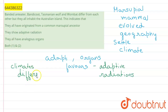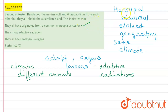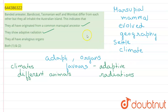Even though they share a common marsupial ancestor, because of geography they are now different animals. Looking at our options: the first option — they all originated from a common marsupial ancestor — is a true statement. They are all ultimately marsupial mammals but show different characters. They also show adaptive radiation, as they have evolved in different climatic conditions.